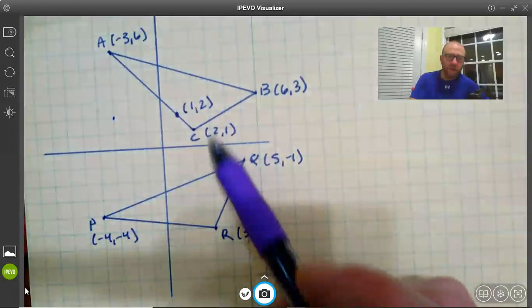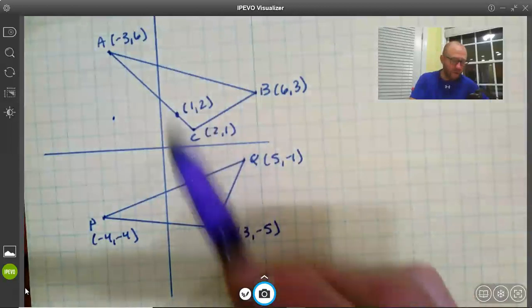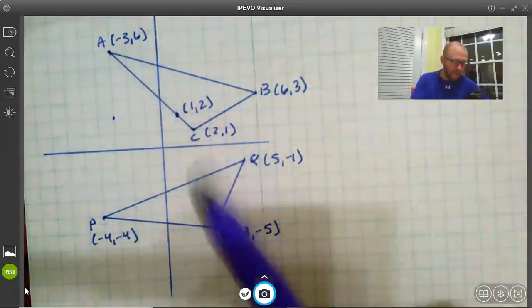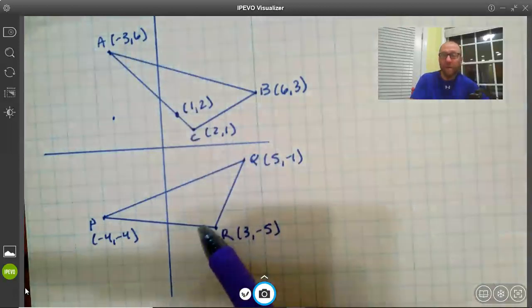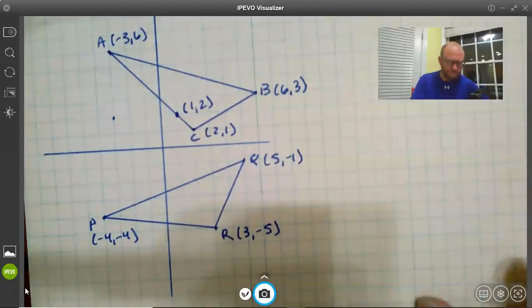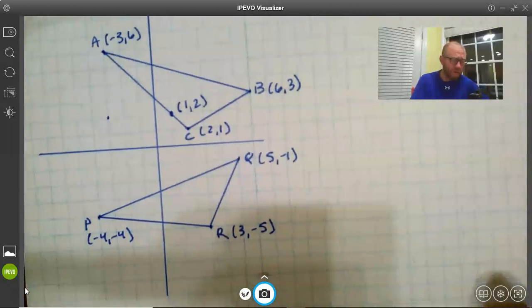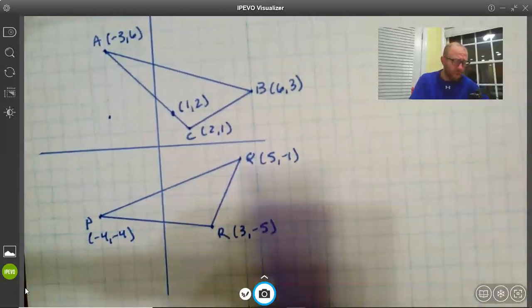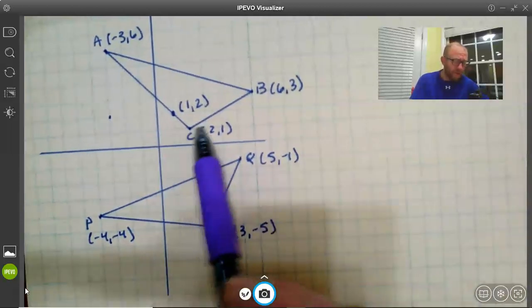B will rotate down to Q, C down to R, and A down to P. So this point is going to end up down on this side down here but where on that side? I want the exact coordinates. So if we look here you'll notice that this isn't too hard to find.